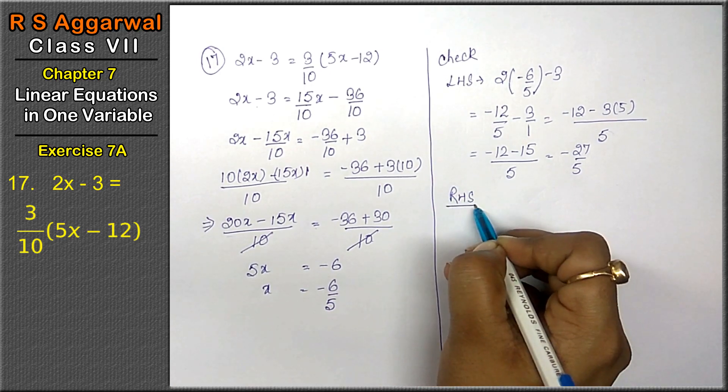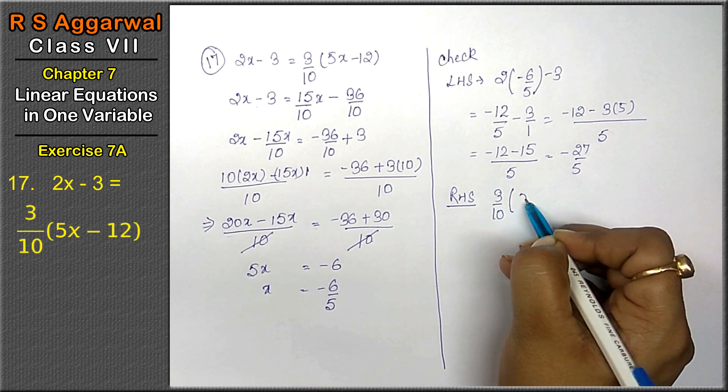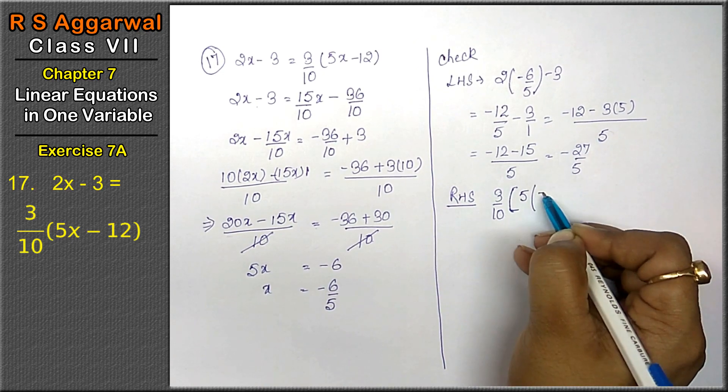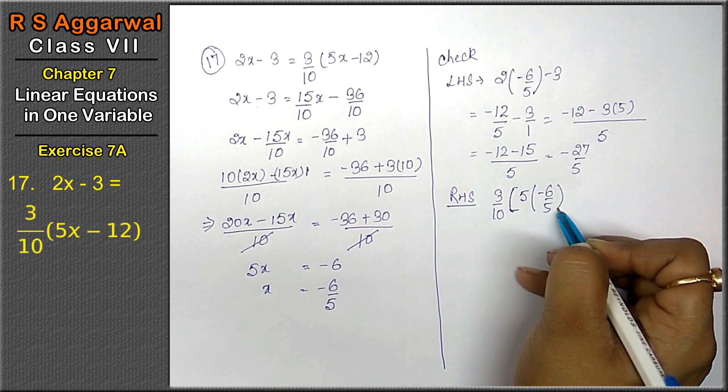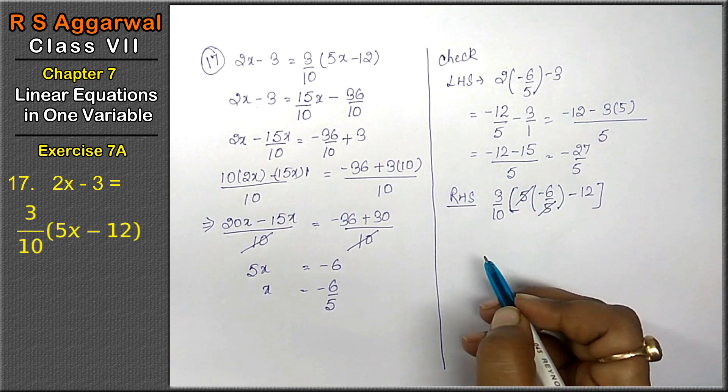Right-hand side. 3 upon 10, 5 into minus 6 upon 5 minus 12. 5, 5 deduct. That is 3 upon 10 into minus 6 minus 12.